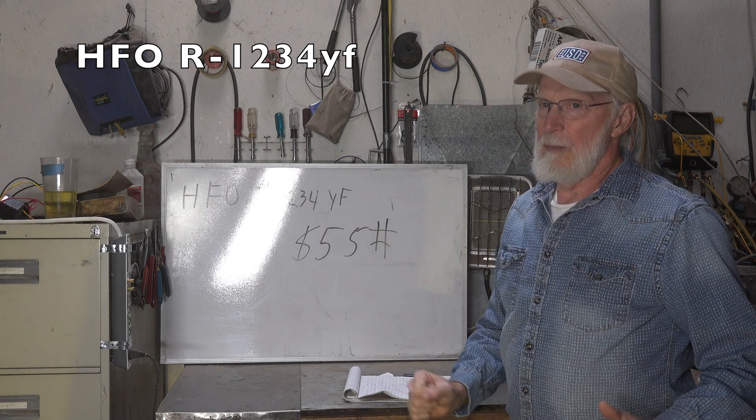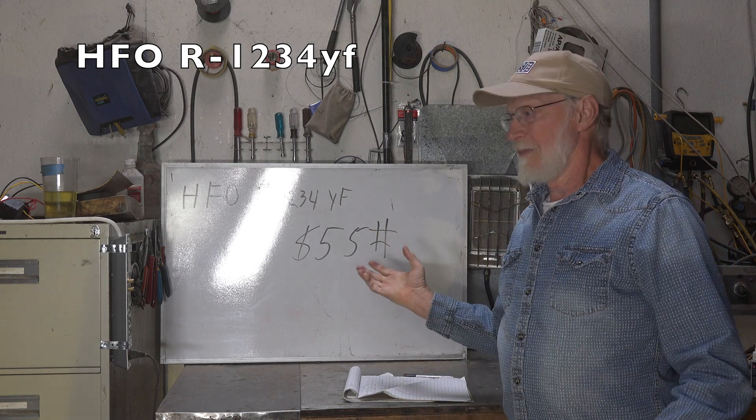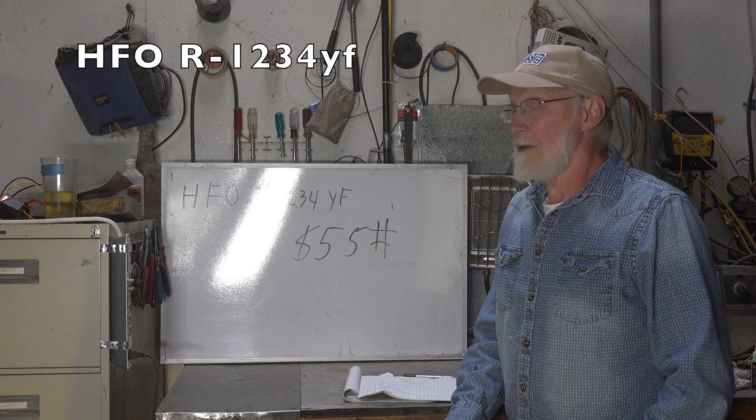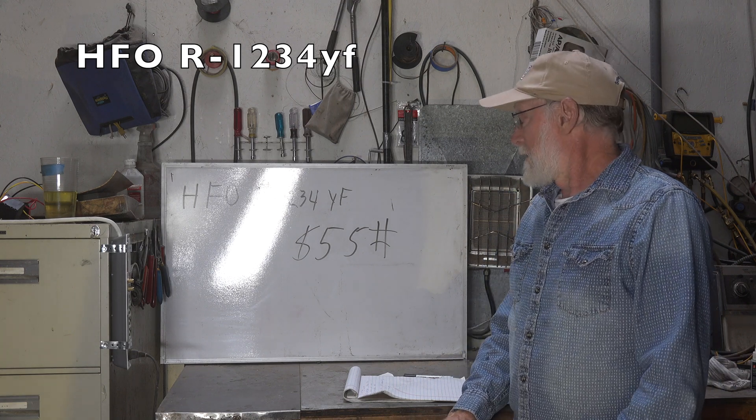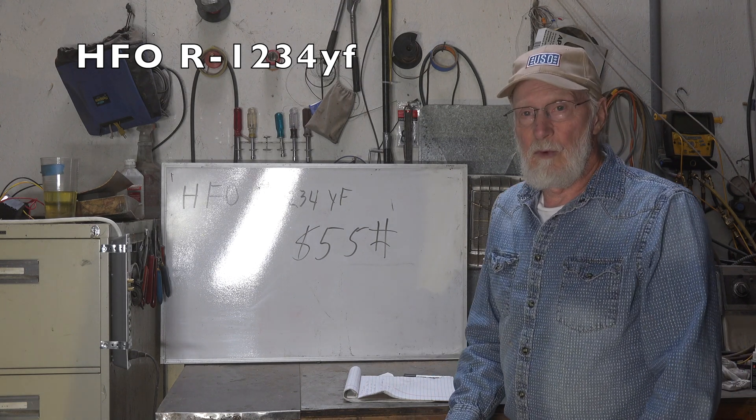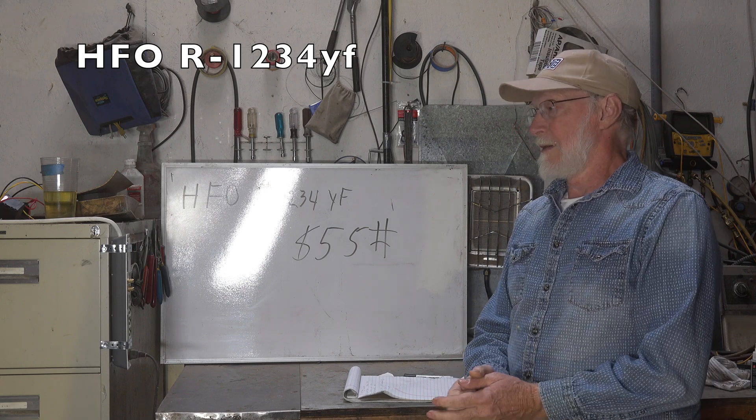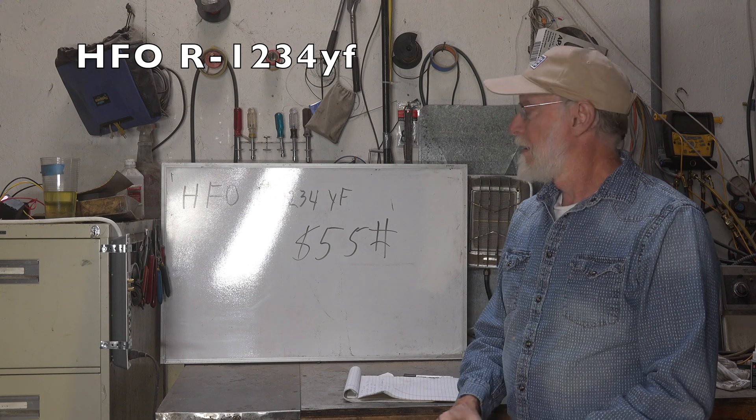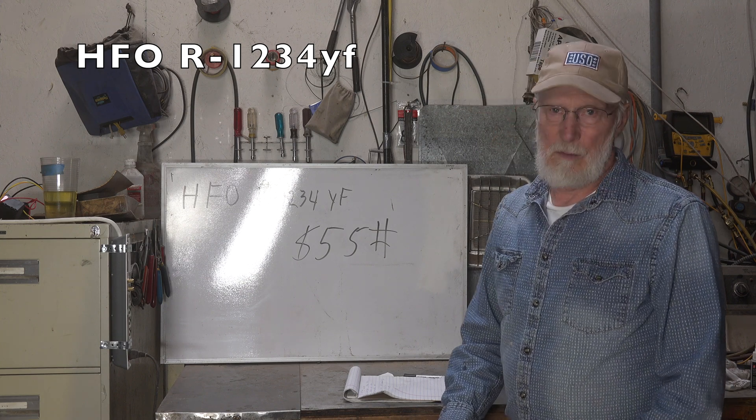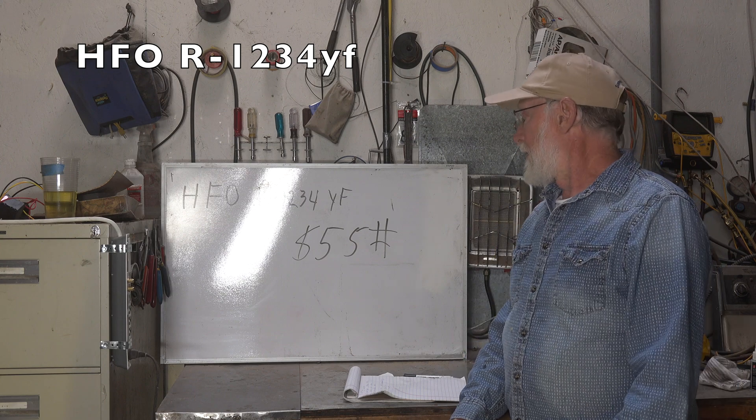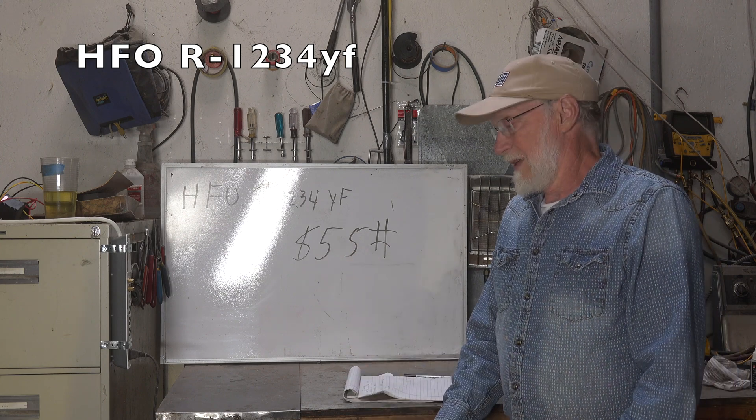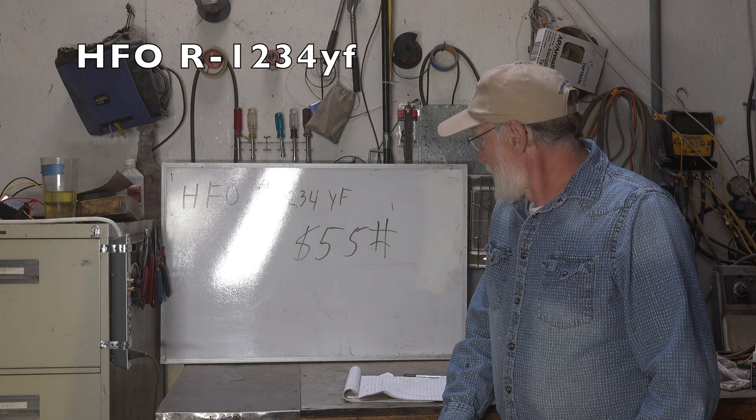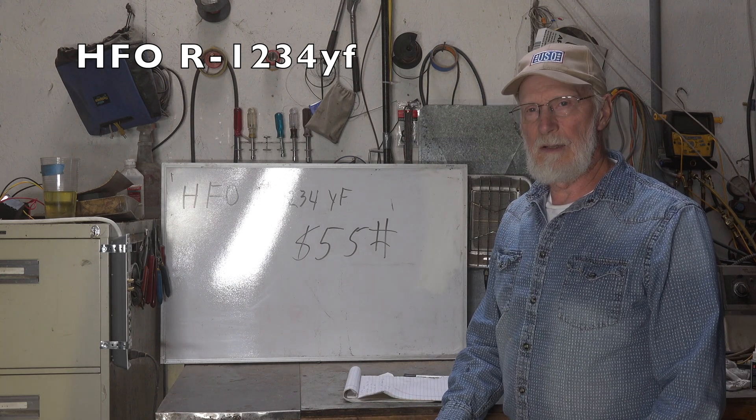Other refrigerants are hard to make too. R12 is hard to make. When we first started making it, it was very expensive and it was hard to make. Last price I knew of R12 before they started taxing it was $1 a pound. R22 was $2 a pound. And that's, you know, contractor cost. This stuff's $55. I guess inflation's taking its toll, huh?